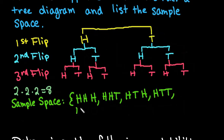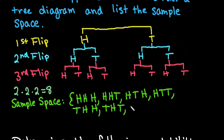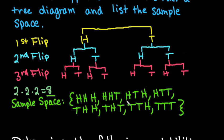With tails on the first coin, we could get tails-heads-heads, tails-heads-tails, tails-tails-heads, or all three tails. This backs up the fundamental counting principle — we have eight different arrangements of our coin flips.